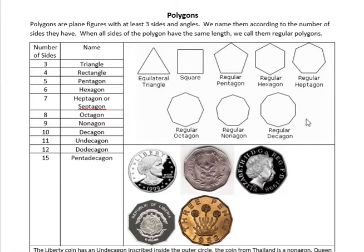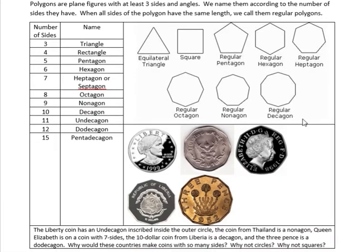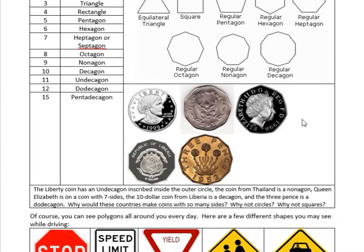Sometimes it's interesting to see where these kinds of shapes occur. Coins sometimes have shapes that match some of these polygons. Our liberty coin from 1999 is actually a circle on the outside, but inscribed within that is an undecagon — you can see the little sides there, eleven sides inside that coin. This coin from Thailand is a nonagon with nine sides. And Queen Elizabeth appears on this coin, which is a seven-sided heptagon or septagon.